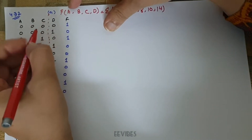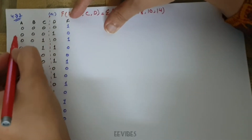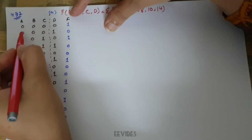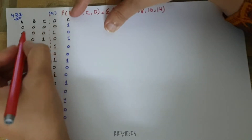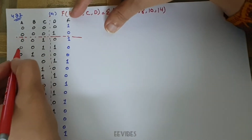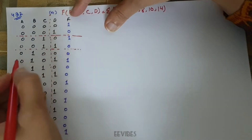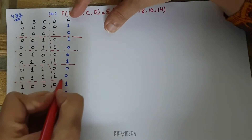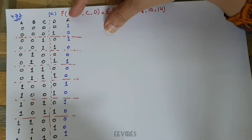The next step is to partition further inputs where their combinations remain the same. A is 0 0, B is 0 0, and C is 0 0 while D is changing from 0 to 1, so I draw a partitioning line here and extend it through the full definition of the function.